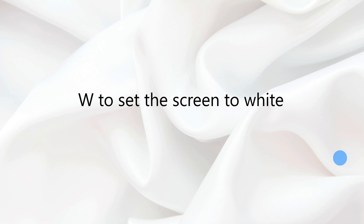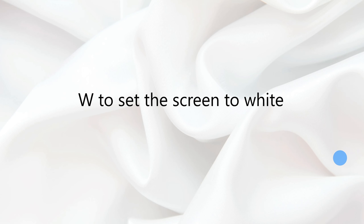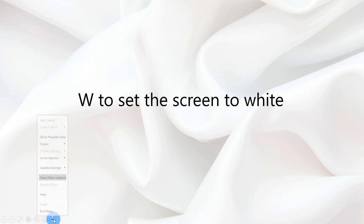You can press the W key on your keyboard and that will shift the slide to white. I'll press W — and here you see it, my slide is white. Press it again and it brings me back to the slide. This is very effective if you're presenting content and then want your audience to focus on you instead of the slide. A presenter I saw used this effectively — she put up a website design image, hit W to hide it, and had the audience guess what had changed.